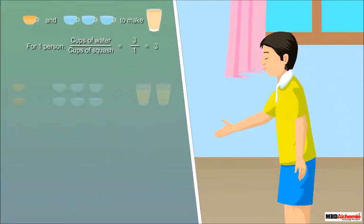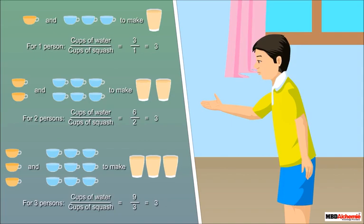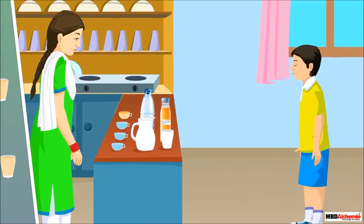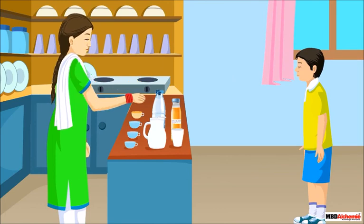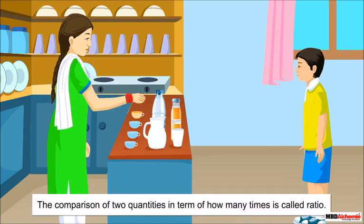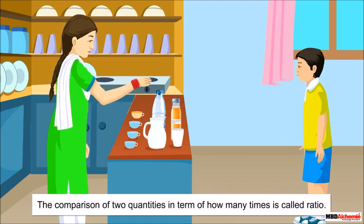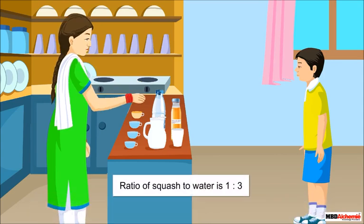If we divide the number of cups of water by the number of cups of squash, we get three each time. It is denoting three times one. Correct! Here you are comparing using ratios. The comparison of two quantities in terms of how many times is called a ratio. The ratio of squash to water is one is to three, and it is read as 'one is to three.'